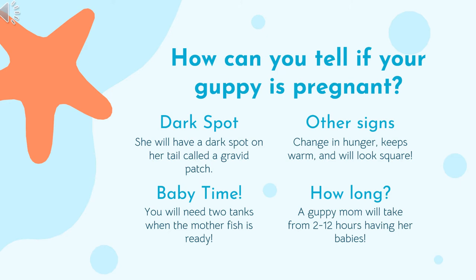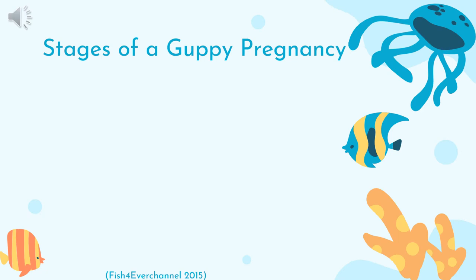Now it should be baby time. When your guppy is ready to have her babies, she needs to have two tanks — one where the babies stay as they grow and one where the mom fish recovers. A guppy mom will take anywhere from 2 to 12 hours to have all her babies. Here's a video showing the stages of a guppy pregnancy, which will give you a visual so you can see the changes a guppy mom will go through during her pregnancy.